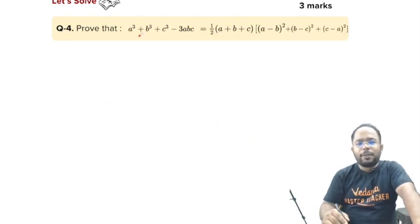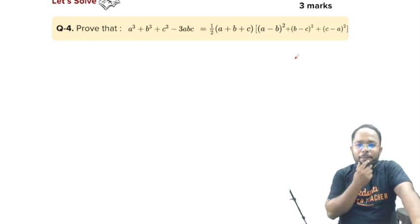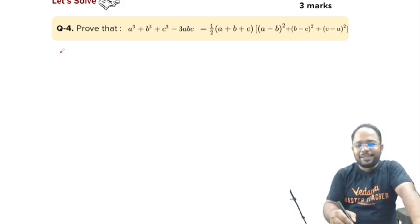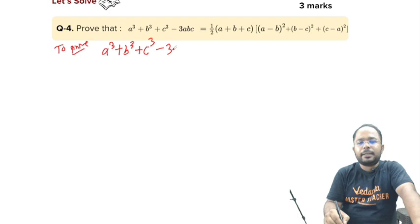Next question. Prove that. Very nice question. Prove that a³ + b³ + c³ - 3abc is equal to half of (a + b + c)[(a - b)² + (b - c)² + (c - a)²]. How we will prove it? Click on the pause button and do it. And try to get that whether you are able to prove it or not. What we have to do is we have to prove the left hand side is equal to right hand side. To prove, on the left hand side we have a³ + b³ + c³ - 3abc.